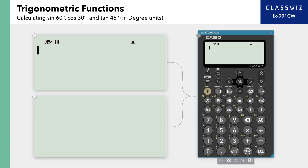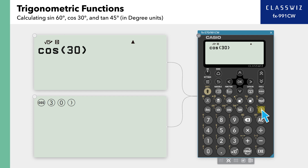Next, let's calculate cosine 30 degrees. Enter cosine, 3, 0, and closing parenthesis. Then press Execute to find a result of square root of 3 over 2.